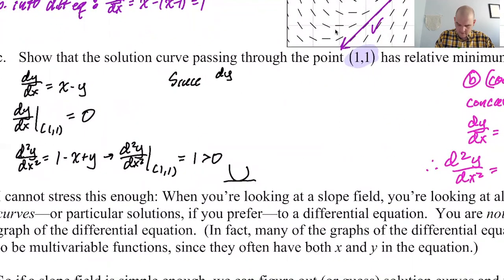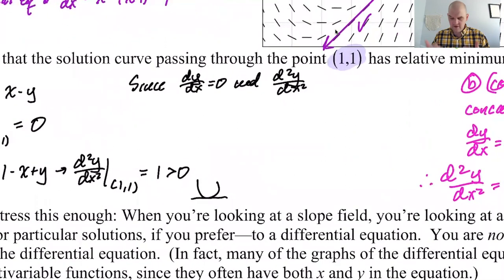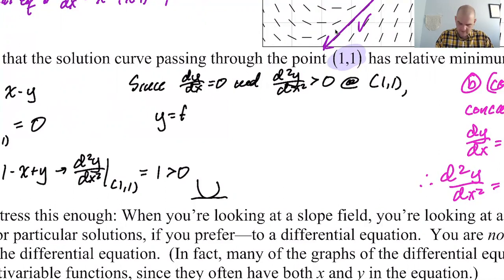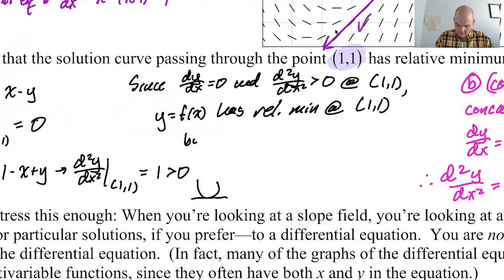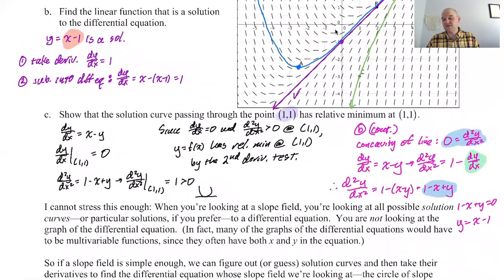Writing this up formally: since dy/dx equals zero and the second derivative is greater than zero at (1, 1), then y equals f(x) has a relative minimum at (1, 1) by the second derivative test. Our little digression actually helped us because we ended up needing the second derivative anyway. You will use the second derivative test frequently when dealing with slope fields.